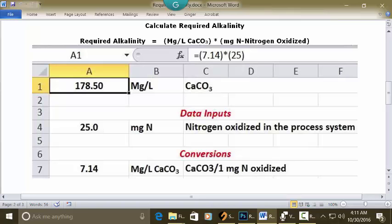And in the address bar you can type in this formula: equals sign open parenthesis 7.14 close parenthesis multiplication key open parenthesis 25 close parenthesis. And then press enter.